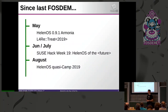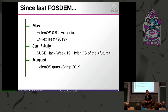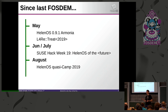This is the main timeline of events that took place last year. One of those big events happened in May — it was the first and also the only release last year, 0.9.1, codename Armonia. The reason it's called Armonia is that in that release we merged the ARM64 port made by Petr. The author is present in this room, and there was also some other ARM work, so that's why it is called Armonia.